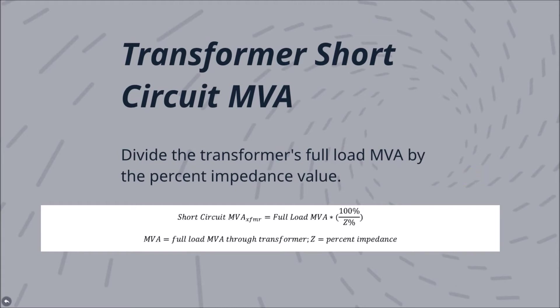Next, the transformer short-circuit MVA value describes the total amount of apparent power through a transformer during a three-phase fault. This value is found by dividing the full-load MVA of the transformer by the percent impedance of the transformer.